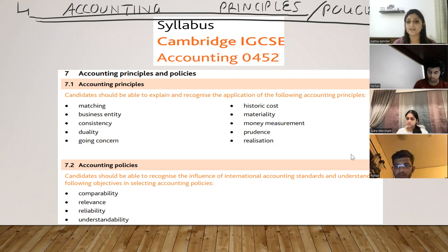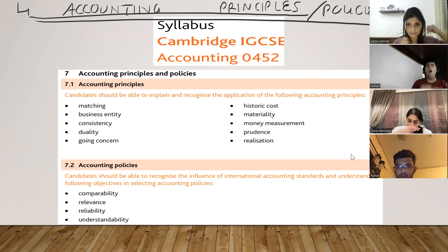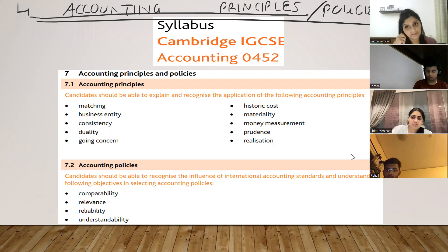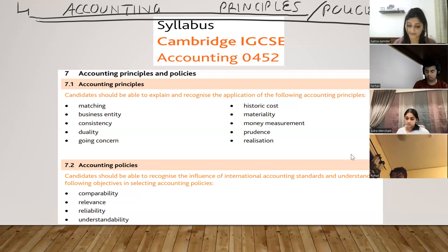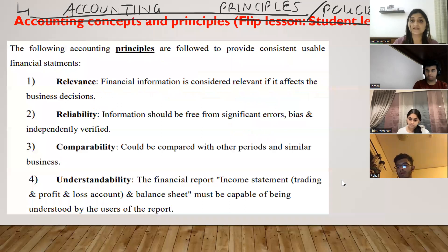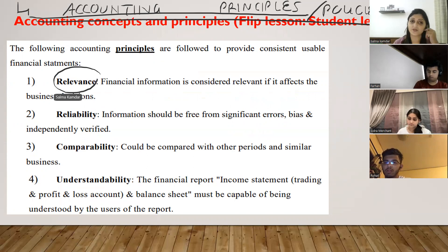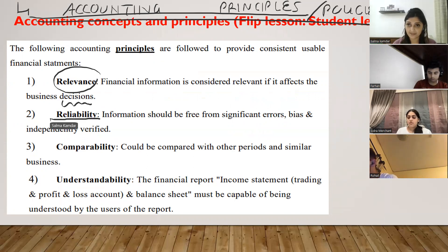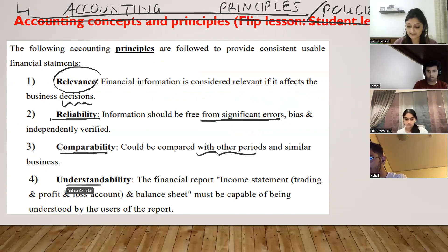When is the accounting principle relevant? When you can take decisions based on it. It will be reliable when it is free from errors. It will be comparable when it can be compared with other periods. The understandability feature will be there if it is capable to be understood.